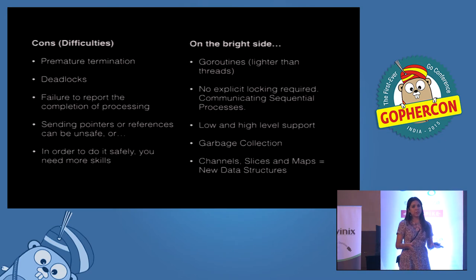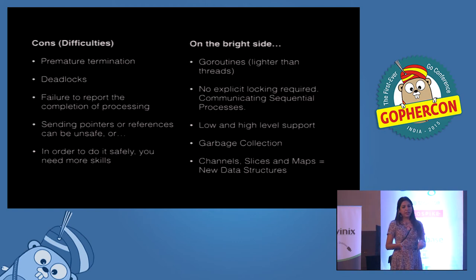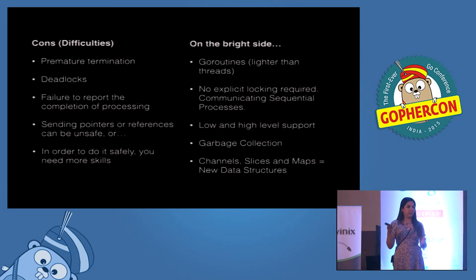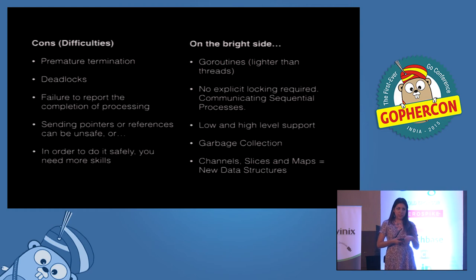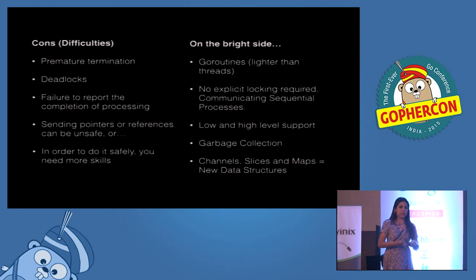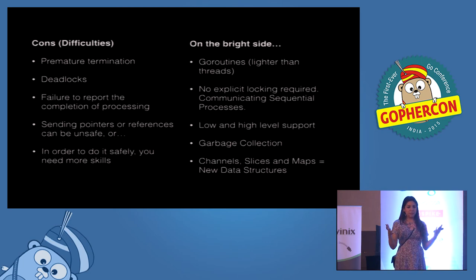On the bright side, we have goroutines, which are way lighter than traditional threads. No explicit locking is required, though it is possible to do locking in Go systems. This is thanks to communicating sequential processes. Go also has both low and high level support, which is not common in all languages — they either have low or high level support. And there's garbage collection. And finally, our stars here: the data structures made specifically for Go, which are channels, slices, and arrays, which together with other main Go features allow us to create new data structures.